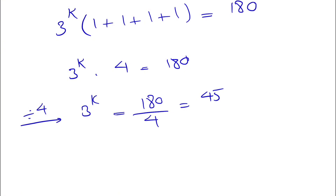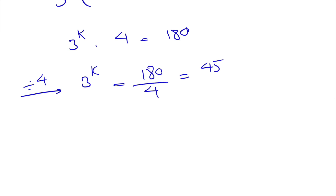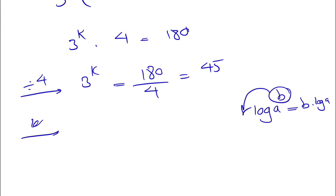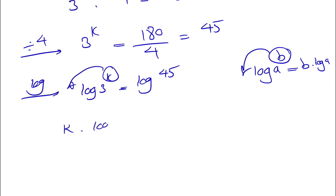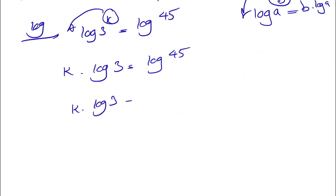Since we have an unknown value in the exponent, the common approach is to take the log of each side. We know that when we have log of a to the power of b, the b comes down in front, so it becomes b times log of a. Taking log of both sides: log of 3 to the k equals log of 45, so k times log of 3 equals log of 45.